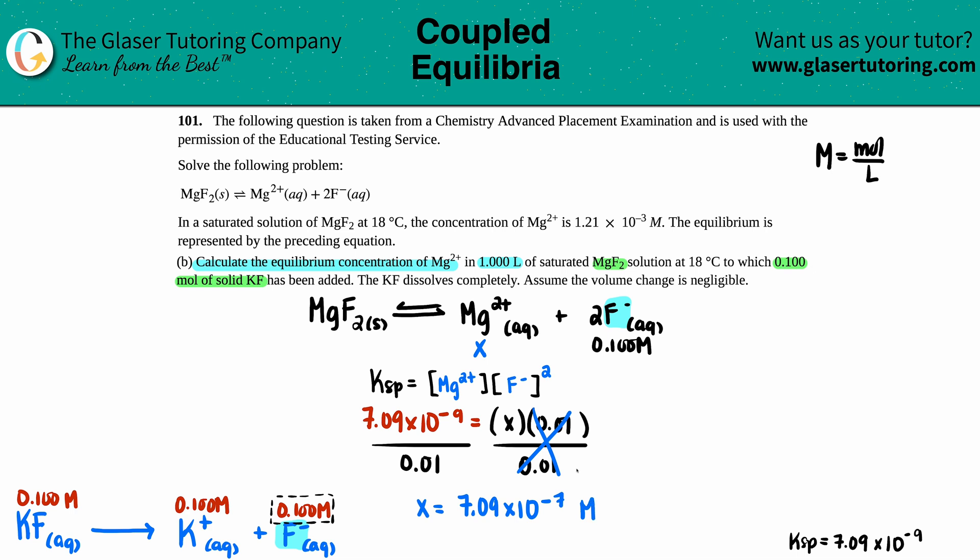We assumed here because we didn't add the plus 2x. We can check the 5% rule. The 5% rule means you take your x value and divide it by your initial concentration, 0.1. If your answer, multiplied by 100 for a percentage, is 5% or less, we assumed correctly. When you do that math, we're way below 5%, so we assumed correctly and can keep that answer. That is the Mg2+ concentration.